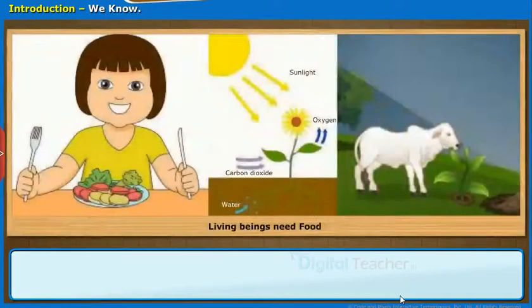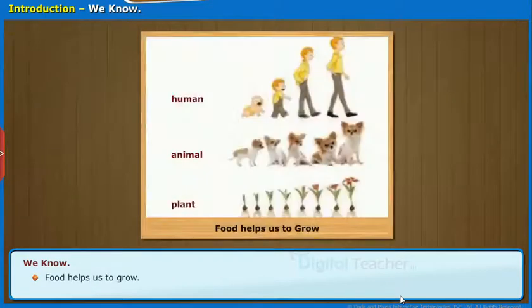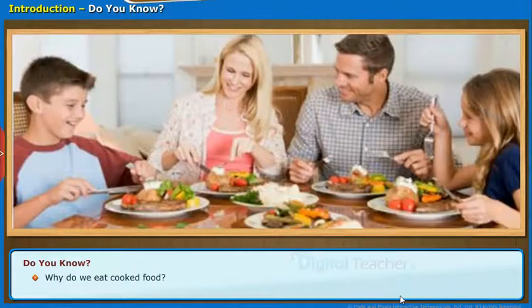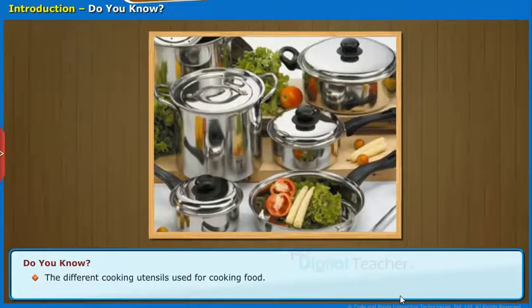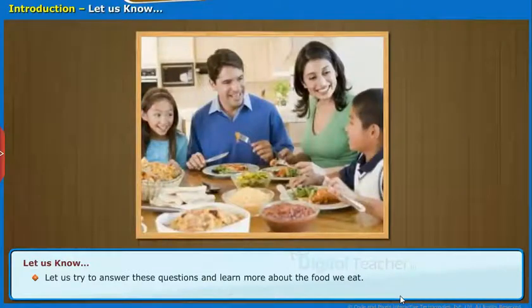Now let us start our chapter with the introduction. In previous classes, we learned that all living beings need food and food helps us to grow. Do you know why we should eat food? Where does the food we eat come from? Why do we eat cooked food? What are the different cooking utensils used? Are all food items cooked in the same manner? Let us try to answer these questions and learn more about the food we eat.